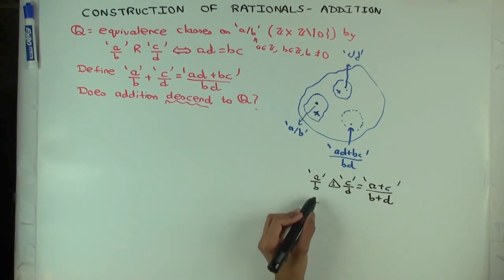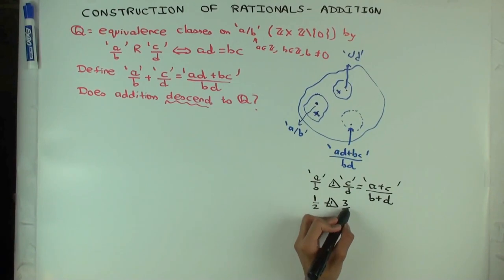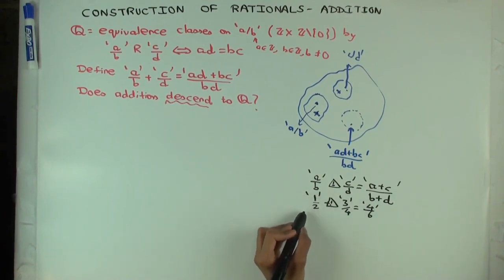Like, let's say you have half plus 3 over 4 is what? 4 over 6.